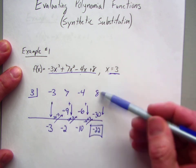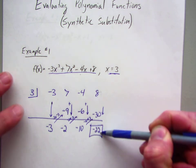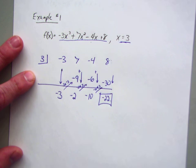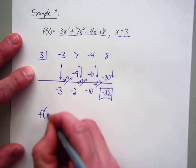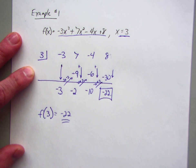So negative 30, or 8 plus negative 30, or negative 30 plus 8, is negative 22. Since this is the last number, the last spot, this will be my answer. So in other words, f of 3 is going to be negative 22. So negative 22 is your answer.